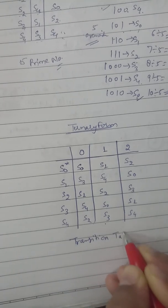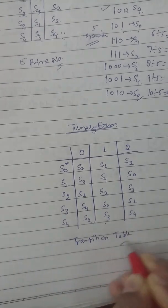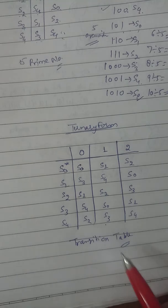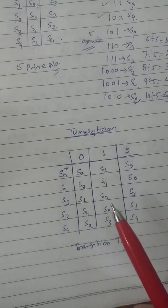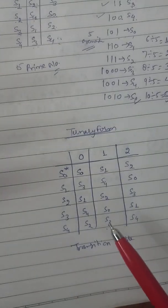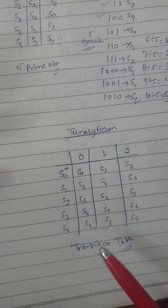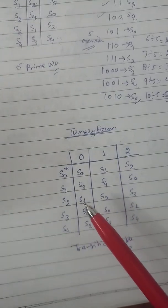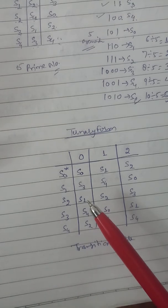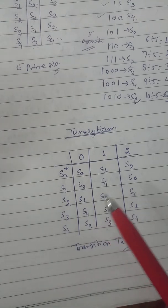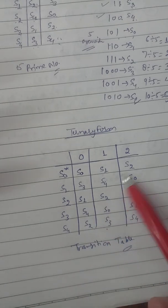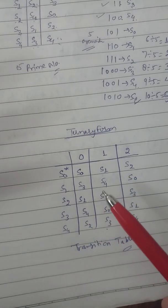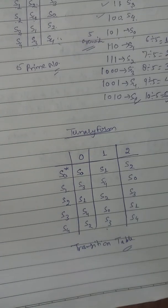With the help of a transition table we can clearly see how easy it is to understand and to write the DFA for any binary number, and we can construct a minimal DFA easily. Thank you.